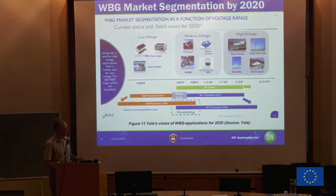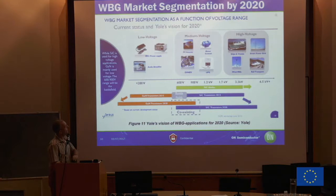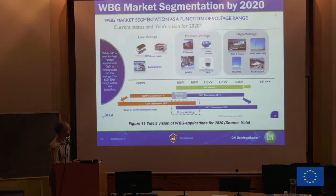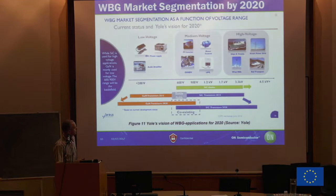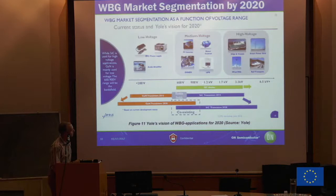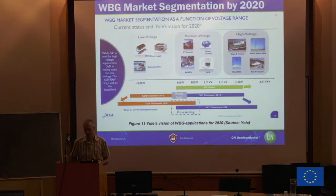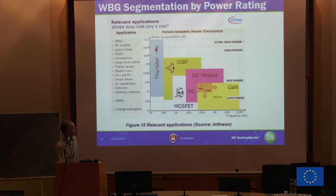If you look at wide bandgap today, there are two main materials: gallium nitride and silicon carbide. Looking at the expected market segmentation by 2020, silicon carbide is mainly in diodes and transistors above 600 volts, while gallium nitride is at lower voltages up to around 600 volts. We believe we can push gallium nitride to higher voltages, while silicon carbide probably cannot. The 600 volt to roughly 1 kilovolt range is where they differentiate — lower voltage is gallium nitride, higher voltage is silicon carbide. By power, silicon carbide clearly goes to higher power at 100 kilowatts, whereas GaN is believed to be around a few to 10 kilowatts, which is still the vast majority of applications.